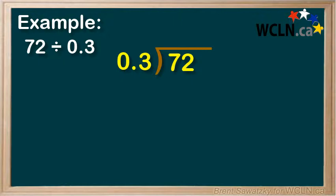First step. This question looks kind of weird with the decimal in there, so let's remove it. If we multiply the 0.3 by 10, it becomes 3. If we also multiply the 72 by 10, we get 720. Since we multiplied both the divisor and the dividend by 10, the question is still the same. So we're good to proceed.